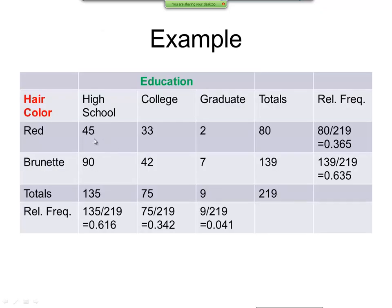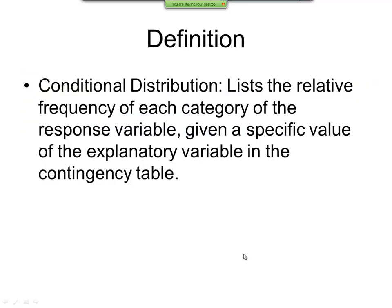We start with our original. We added our columns. 45 plus 90 is 135. 33 plus 42 is 75. 2 plus 7 is 9. And then our totals for the rows. 45 plus 33 plus 2 is 80. 90 plus 42 plus 7 is 139. And then our grand total. Then what you do is you take each one of these individual totals and you divide by your grand total. So I take 135 divided by 219. This is 0.616. 75 divided by 219. 9 divided by 219. Over here in the rows, 80 divided by 219. And 139 divided by 219.